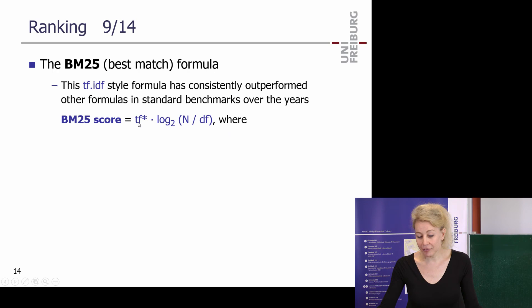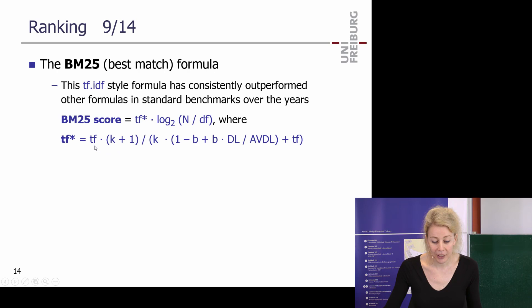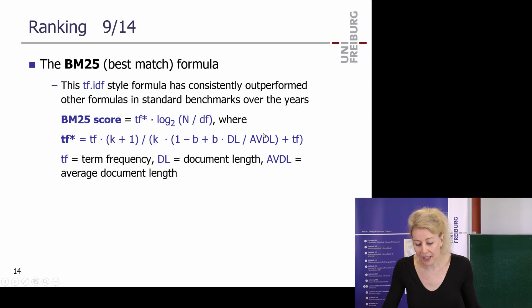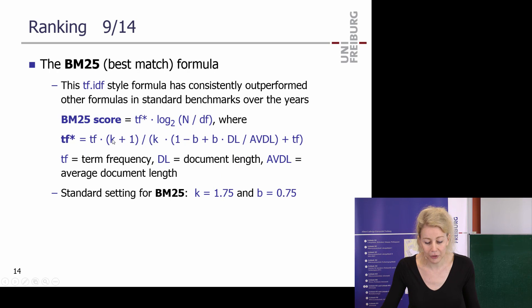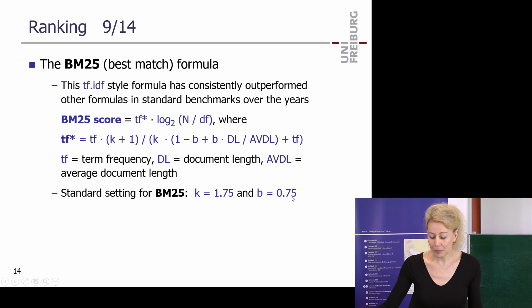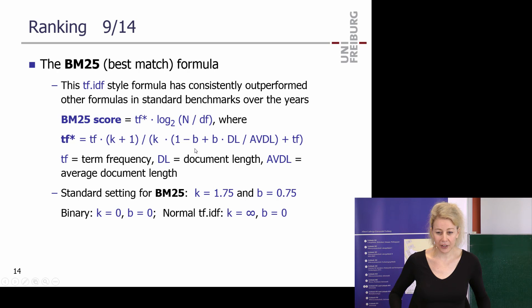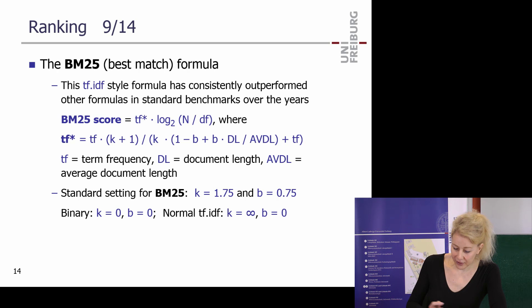BM25 is like TF-IDF — the IDF part remains unchanged — but the TF part is modified. The modified TF* is: TF × (K+1) / (K × (1 − B + B × DL/AVDL) + TF), where DL is document length, AVDL is average document length, and K and B are tuning parameters. The default settings are typically K=1.75 and B=0.75, which often work well. It has two standard settings as special cases: with K=0 and B=0 you get binary scoring (word present or not), and with K=infinity and B=0 you get raw TF.